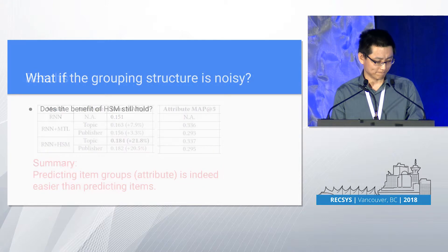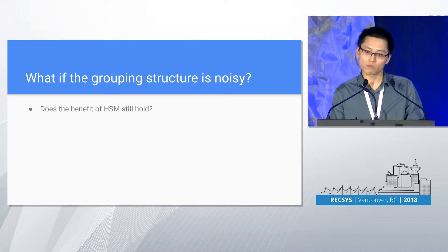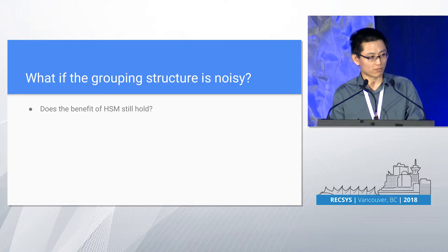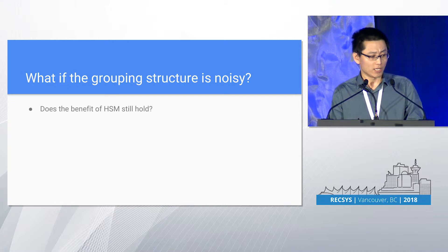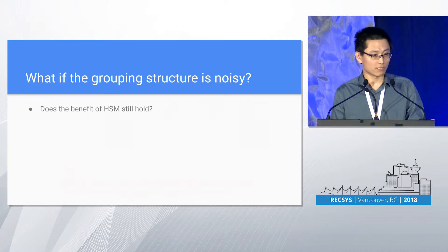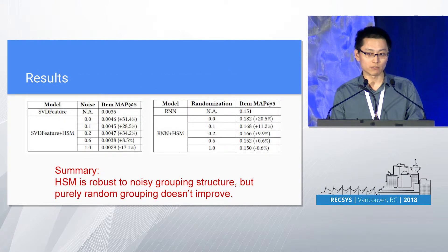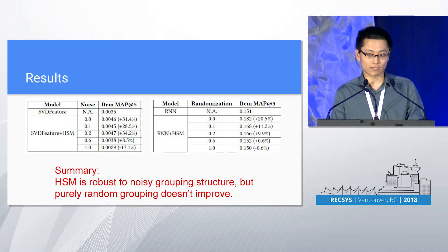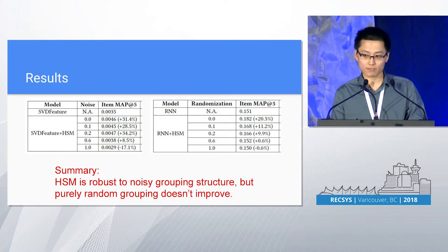Similarly, on the large-scale dataset. What if the grouping structure is noisy? In real-world datasets, item grouping structure can be noisy — does the benefit still hold? We tested this by introducing noise into the grouping structure. If the noise level is zero, we directly use the categorical attribute-induced grouping. If the number is one, we use a purely random grouping structure. We found HSM is robust to noisy grouping structure, but purely random grouping doesn't improve — it has a slight negative effect on accuracy, but doesn't go to zero. As long as the grouping structure is consistent between training and testing, the model still learns how to predict items.